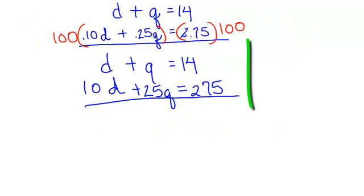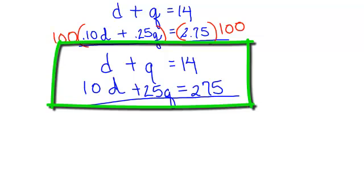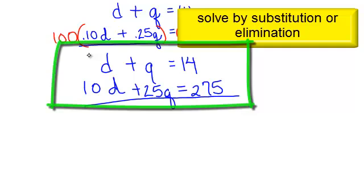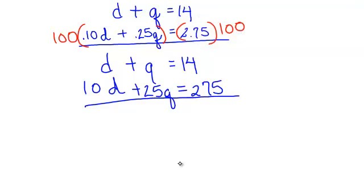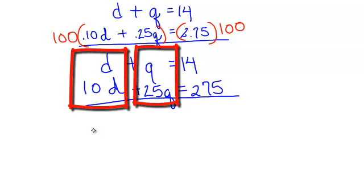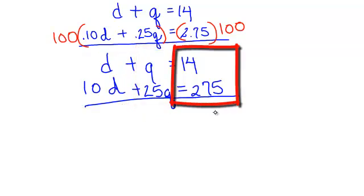We have a system of equations. Do you want to solve this by substitution? Which you could. You could solve for this d, that would be pretty easy. Or do you want to solve this by elimination? I could do it both ways. I'm going to solve this by elimination. I see that my d's are lined up. Great. I see my q's are lined up. Wonderful. Everything's lined up nicely. Would you like to eliminate the d's or the q's?